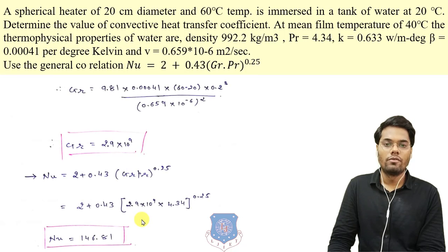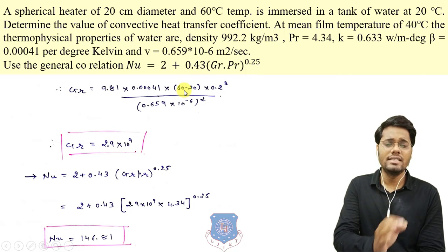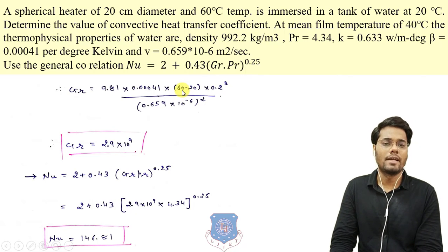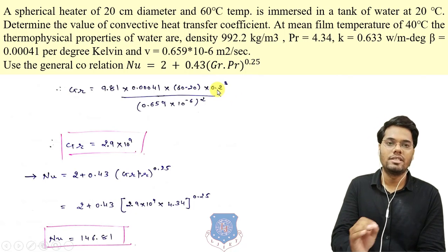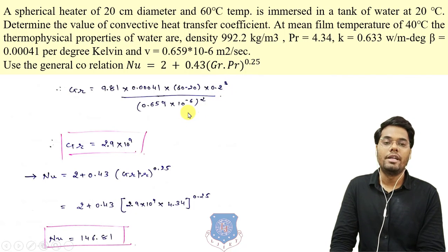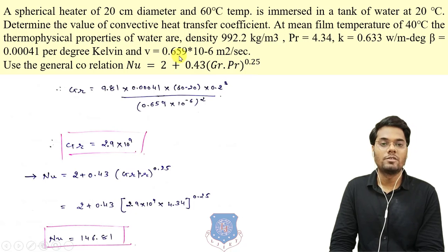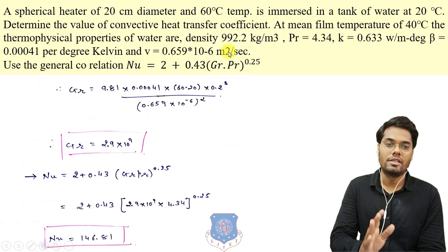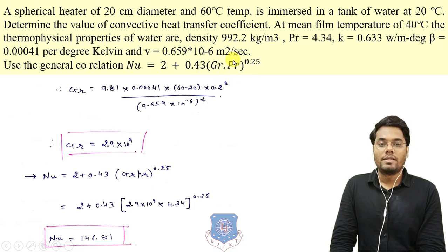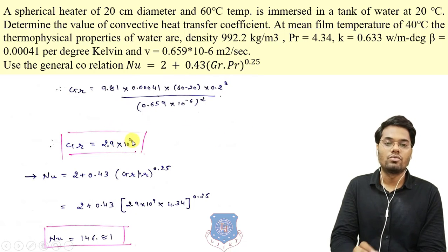We know g = 9.81, beta is given in the question, ΔT = 60 − 20, and the characteristic dimension is the diameter 0.2 m, so 0.2³ divided by kinematic viscosity (0.659 × 10⁻⁶ m²/s) squared. Solving, the Grashoff number is 2.9 × 10⁹.